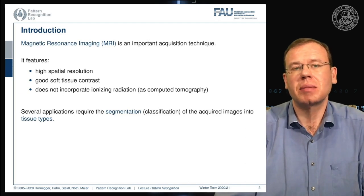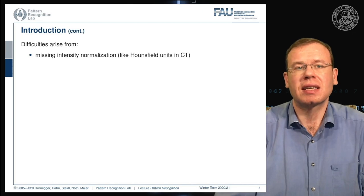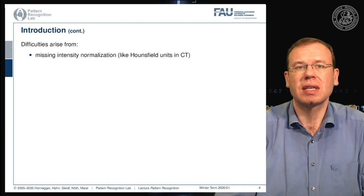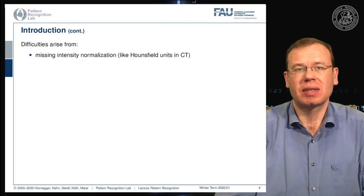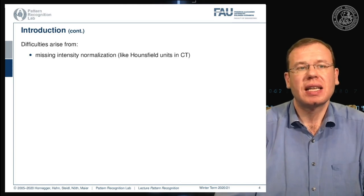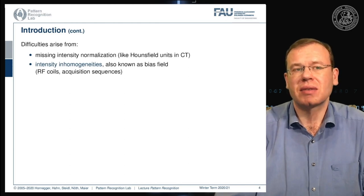A problem arises in MRI in that the intensities are not normalized or standardized. In CT (computed tomography), you have things like the Hounsfield unit that allow a relation to a physical quantity. In MRI this is very difficult, and in many acquisition sequences it is simply not standardized to a physical quantity. This gives rise to intensity inhomogeneities, also known as the bias field, which is introduced by the radio frequency coils and acquisition sequences.